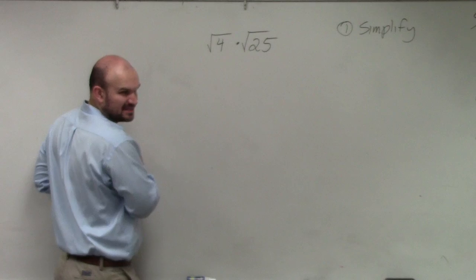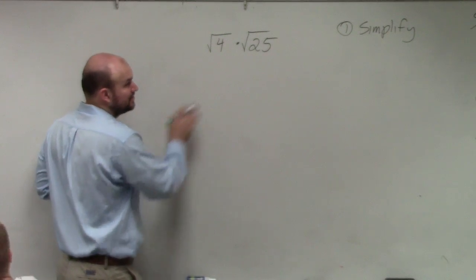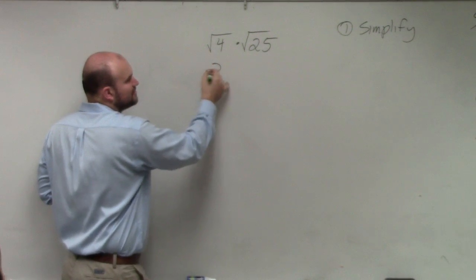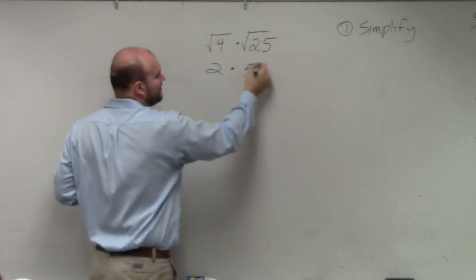Well, I picked a kind of a basic problem, though, just to represent what we're going to do. So the square root of 4 is 2 times the square root of 25 is 5.